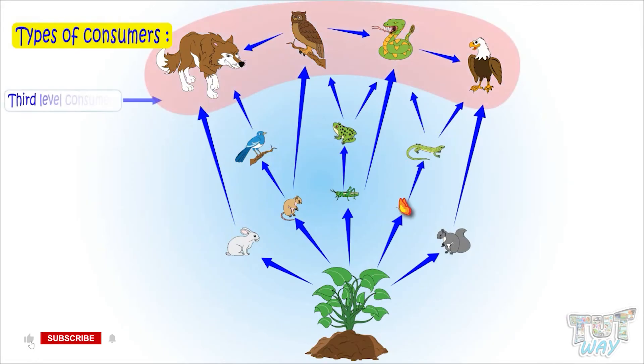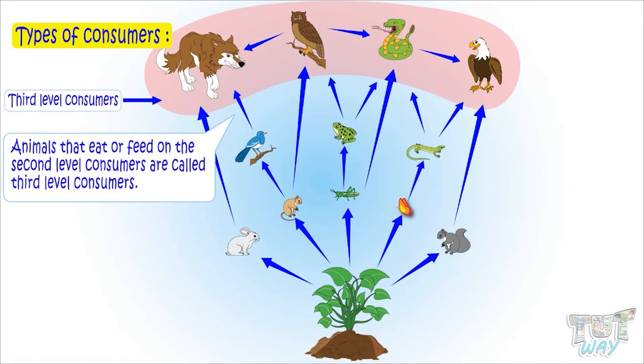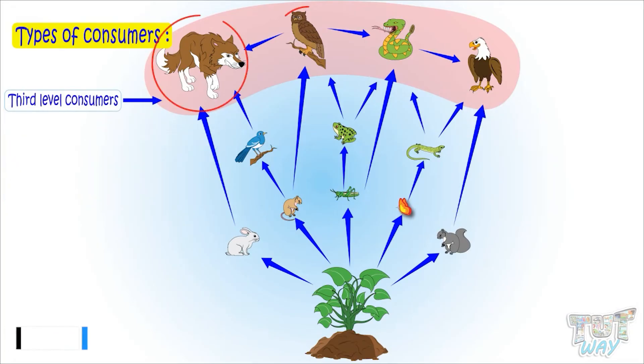Third level consumers are those that eat or feed on the second level consumers, for example fox, owls, snakes, and eagles.